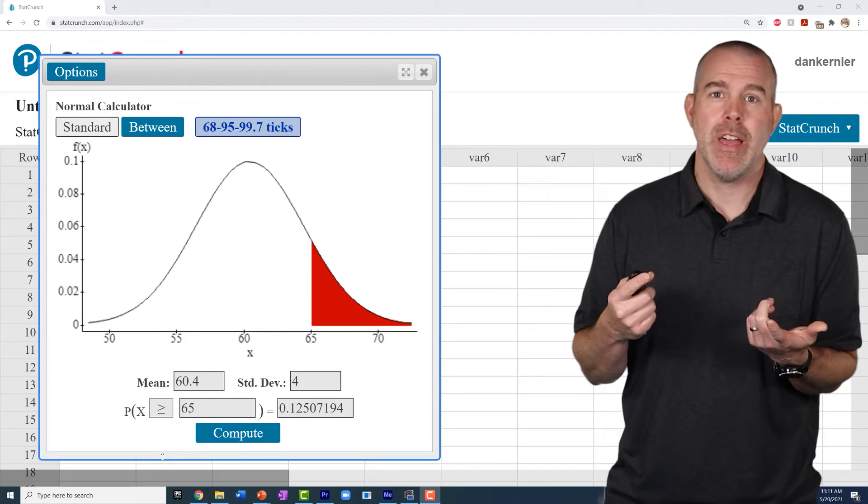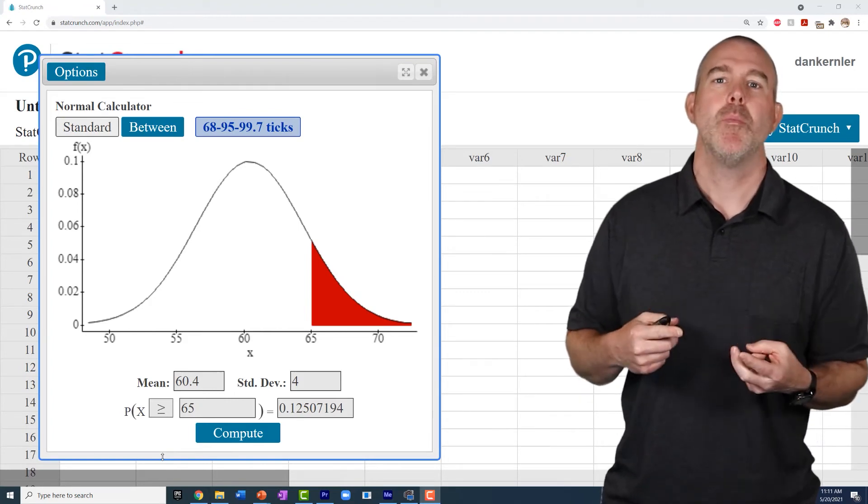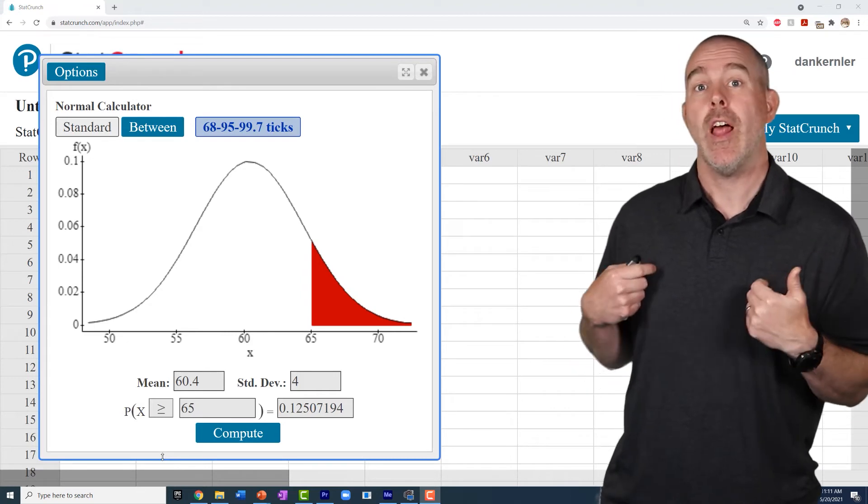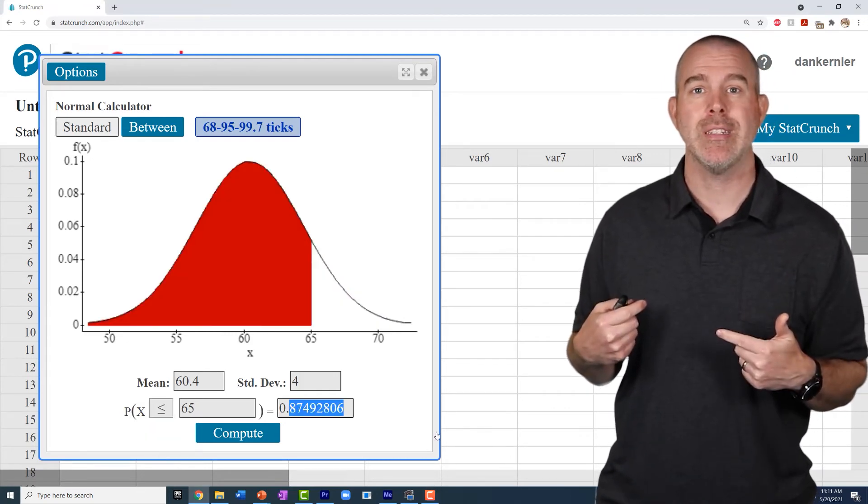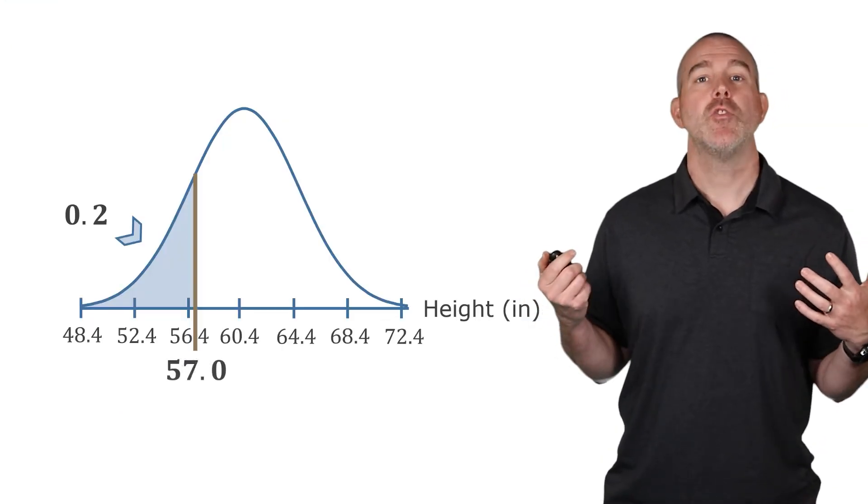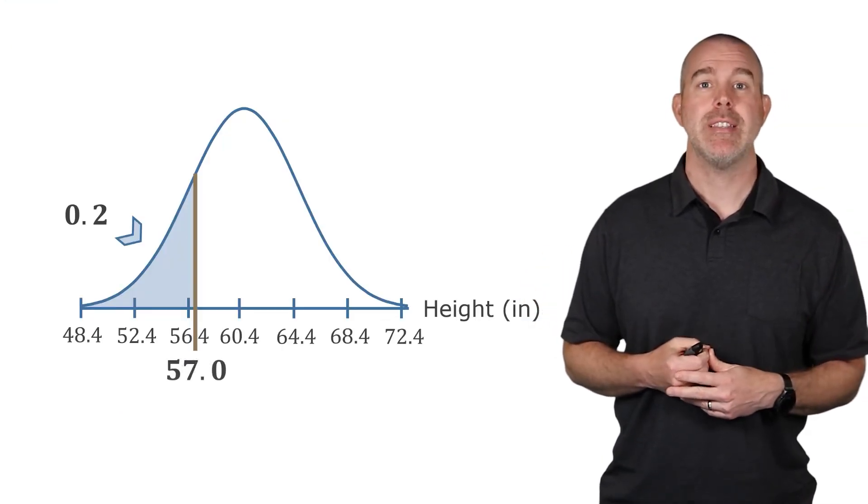We go back, we can go to that same calculator. In fact, we can put in the mean, put in the standard deviation, and now instead of entering in the inches, we enter in the probability, make sure the inequality is pointing to the left, hit Compute, and then we can see that that 20th percentile is about 57 inches.